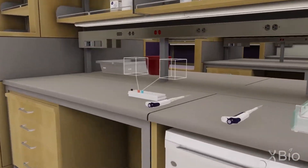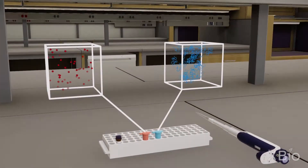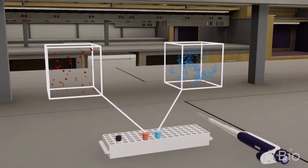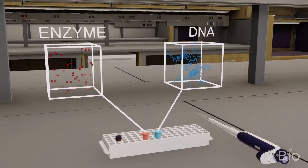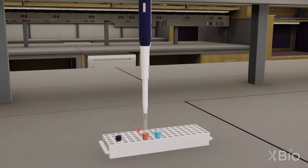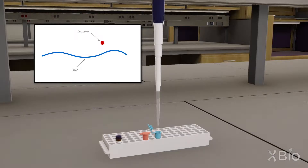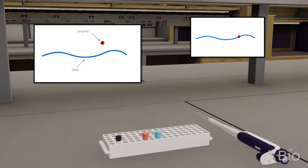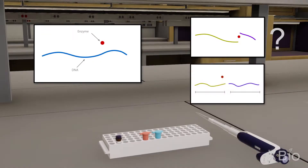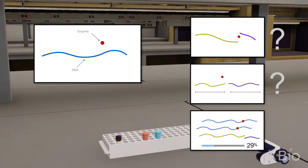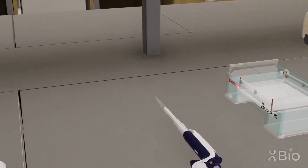In molecular biology, most experiments include a step where we want to see the molecules that we're working with. For example, suppose we're testing whether an enzyme can cut DNA at a specific sequence location. We might start by mixing the enzyme with some DNA of known sequence, but how do we know if anything happened? Did the enzyme cut at the expected location? Did the reaction go to completion? Typically we would use gel electrophoresis to find out.